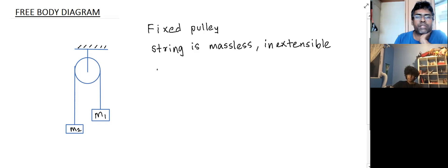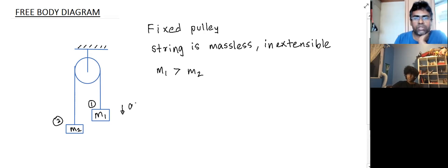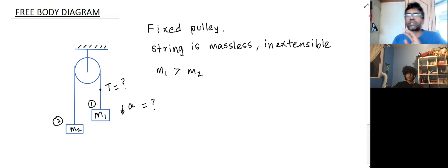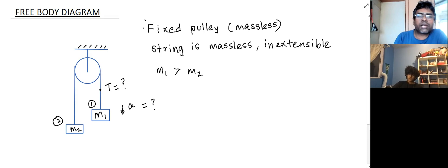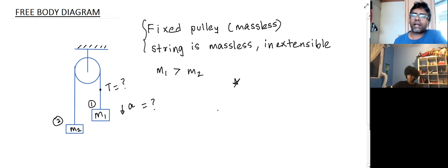If I make an assumption that M1, the first block, and M2, the second block — if M1 is greater than M2 — we're typically asked to find the acceleration of these blocks or maybe the tension in the string, i.e., the force at any cross section in the string. The other assumption is our pulley is also massless, meaning its mass is so small we can ignore it.